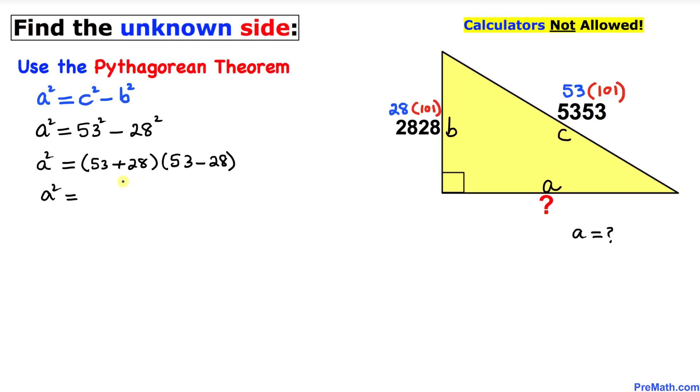So a² equals 53 plus 28, which is going to give us 81, and then times 53 minus 28, which is going to give us 25.